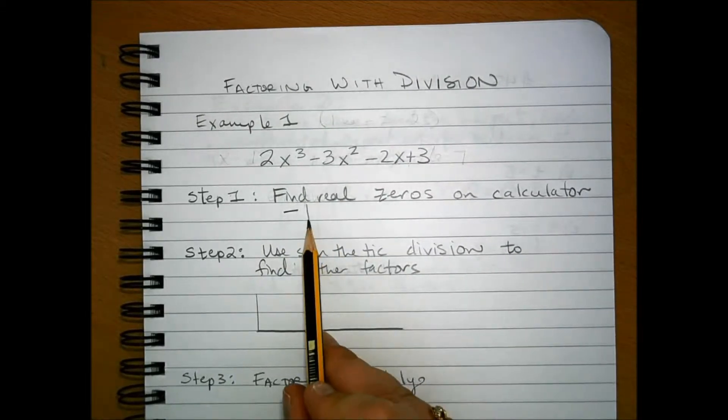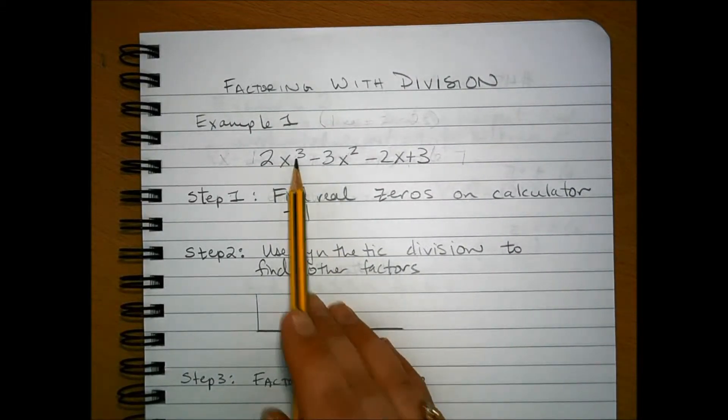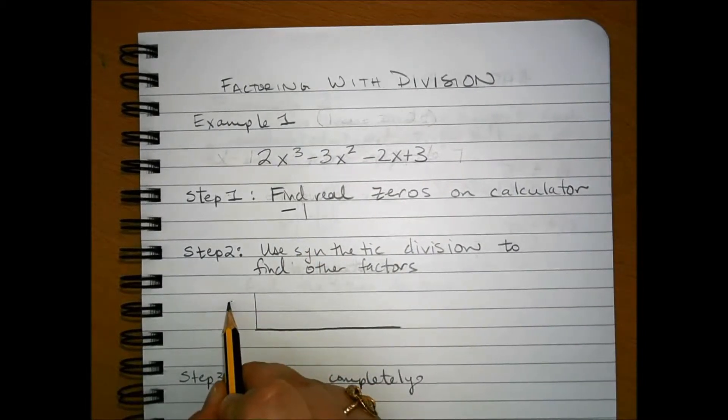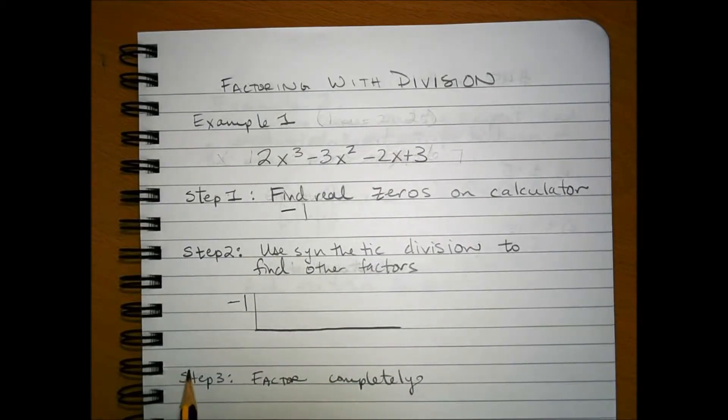We really only need one zero because we have a cubic function and we know we could get it down to a quadratic and we could probably factor the quadratic. So we're going to set up the synthetic division.